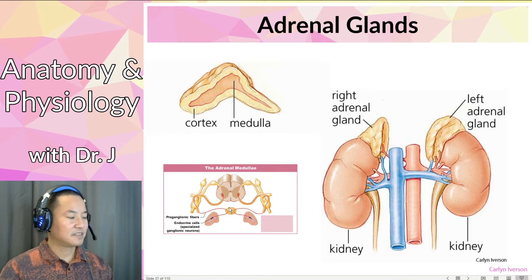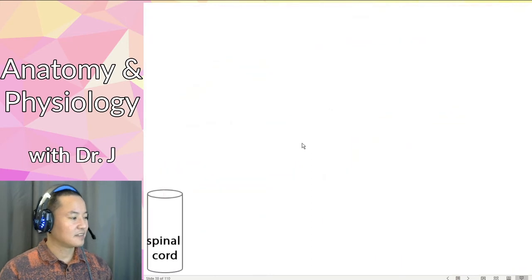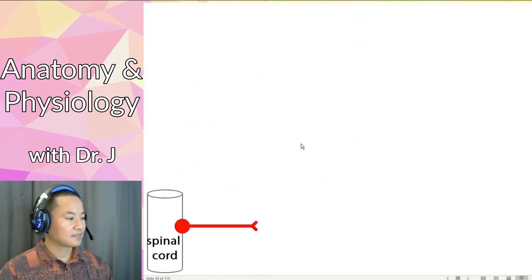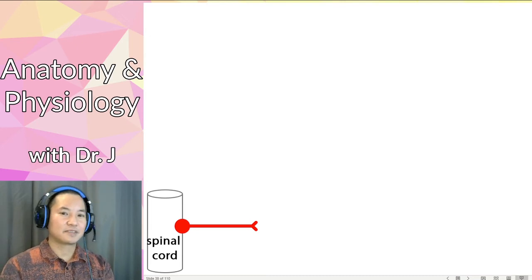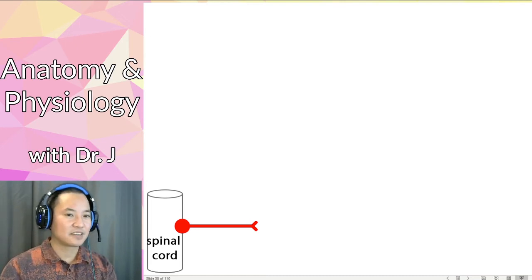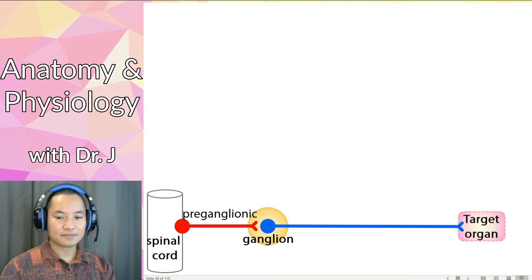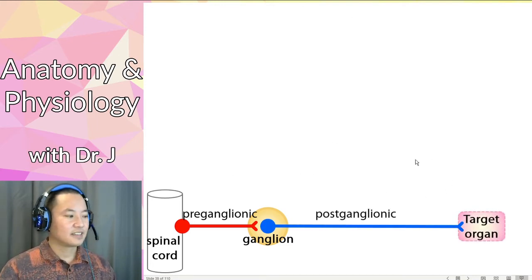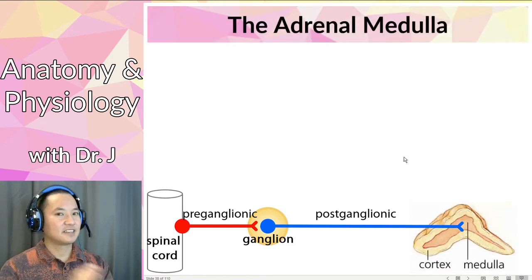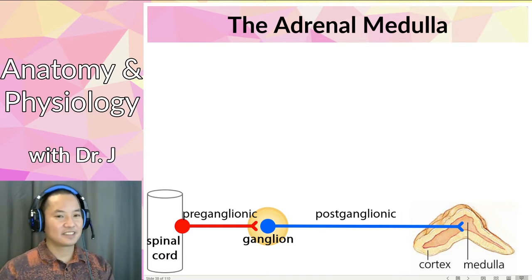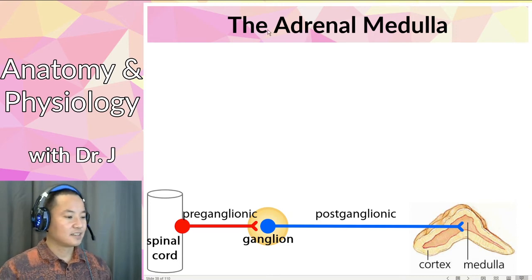The sympathetic nervous system actually innervates the adrenal medulla, and this is a special case worth noting. Most preganglionic fibers in the sympathetic nervous system are relatively short — short preganglionic, then the ganglion, then a long postganglionic fiber going to the target organ. However, the adrenal medulla doesn't quite follow those typical rules of pre- and postganglionic fibers, so put a little asterisk here.